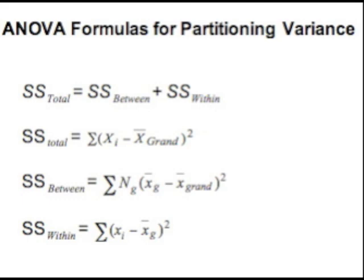Analysis of variance partitions the total variation of some dependent variable into two components: the sum of square deviations or variation between groups and the sum of square deviations within groups. Combined, the sum of squares between plus the sum of squares within equals total variation.